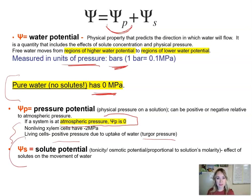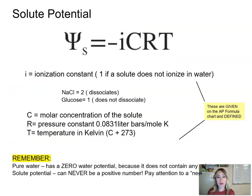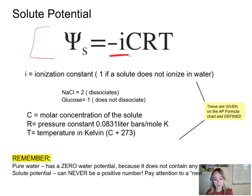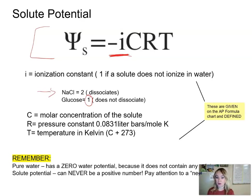Another factor that influences water movement is solute potential — the effect of solutes on the movement of water. We have a formula provided to you which you don't need to memorize. The first component is the ionization constant: if the substance doesn't ionize in water — meaning it doesn't separate into components — we put one. For example, glucose and sucrose have an ionization constant of one. Salt (sodium chloride) dissociates into two ions, so its ionization constant is two. In our lessons and exams we will mainly deal with either sugar or salt.